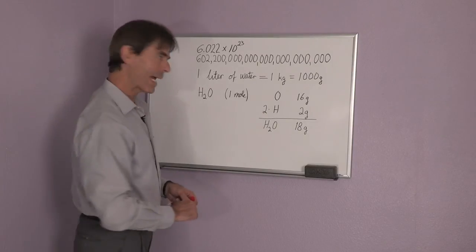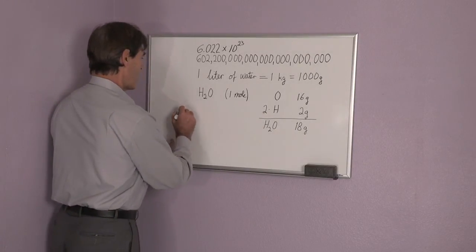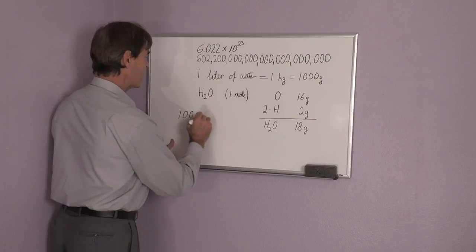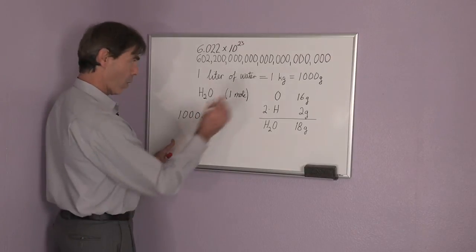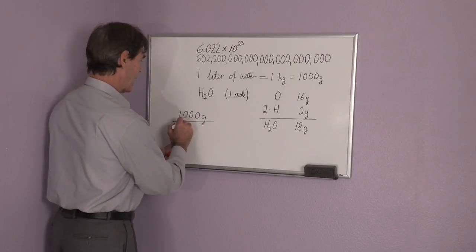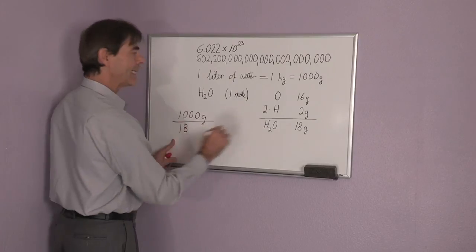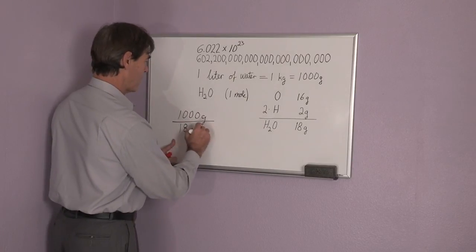So now let's do the math. We have 1,000 grams of water and 18 grams per mole.